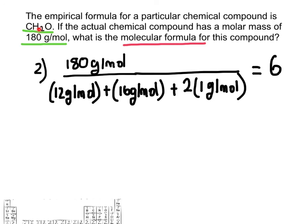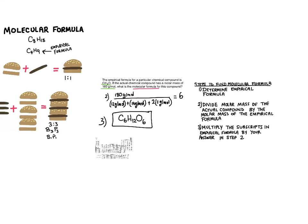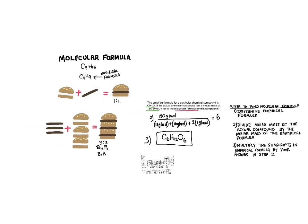So we're going to end up with C, which used to be 1. So we're just going to put a 6 there now. H12 and O6. And there is our molecular formula. That was step 3 was what we did there. And that's how you find the molecular formula for a chemical compound.